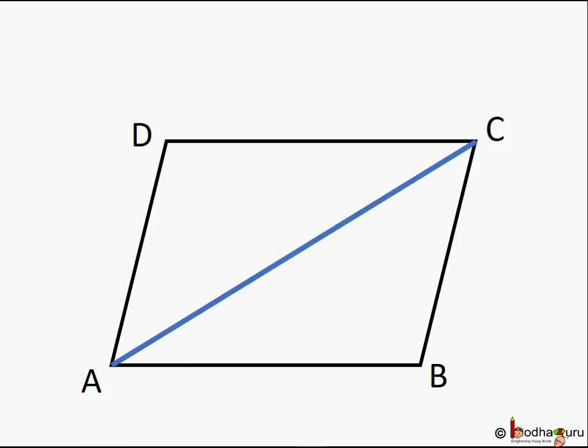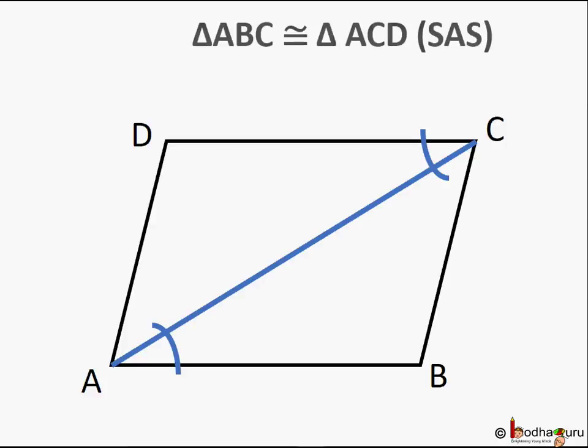We draw AC as the diagonal. Now AC is a transversal for a pair of parallel lines AB and DC, hence alternate angles are equal. So angle CAB is equal to angle ACD, and AB is equal to DC, that is given, and AC is common side.